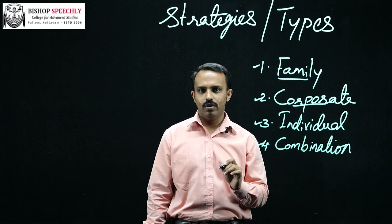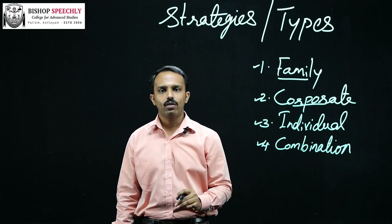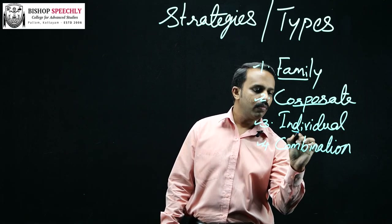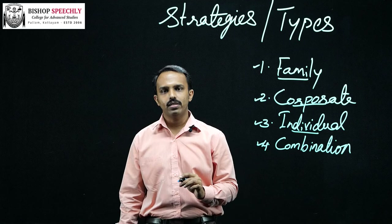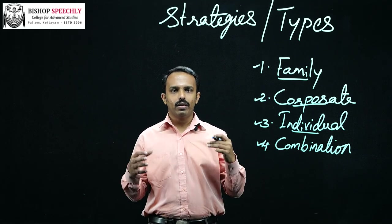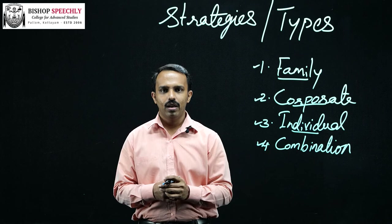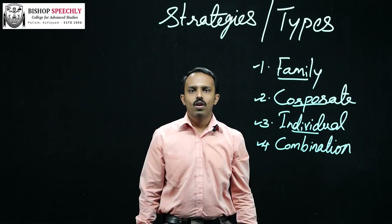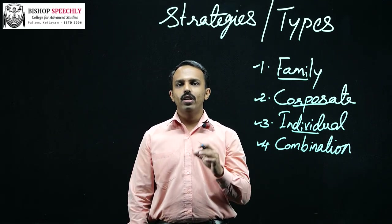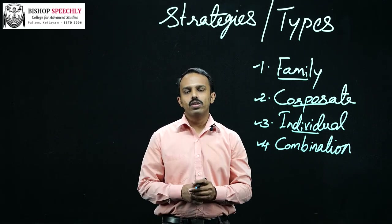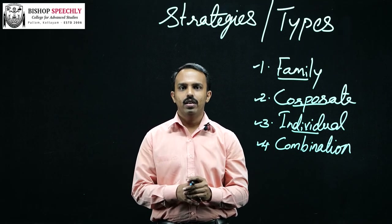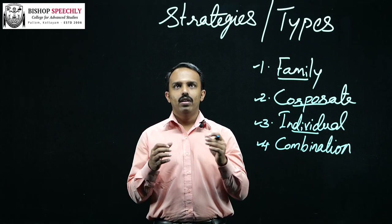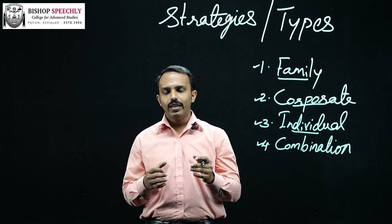The third category is individual branding. Individual branding means the firm makes many products available in the market, but each product has a unique brand name. For example, Hindustan Unilever introduced several products in the market with different brand names — for example, Surf Excel, Rin, Tide, etc.